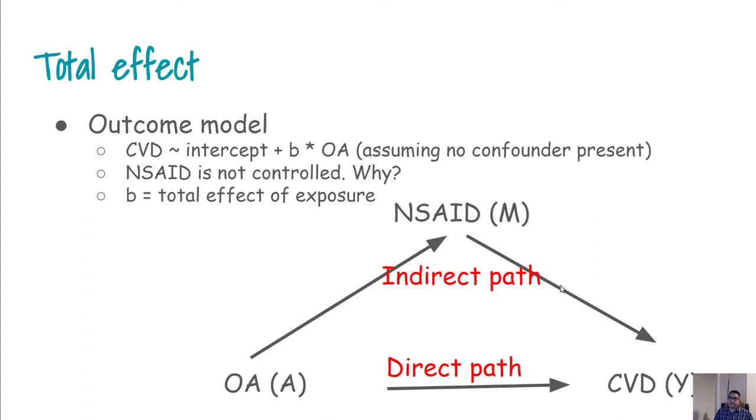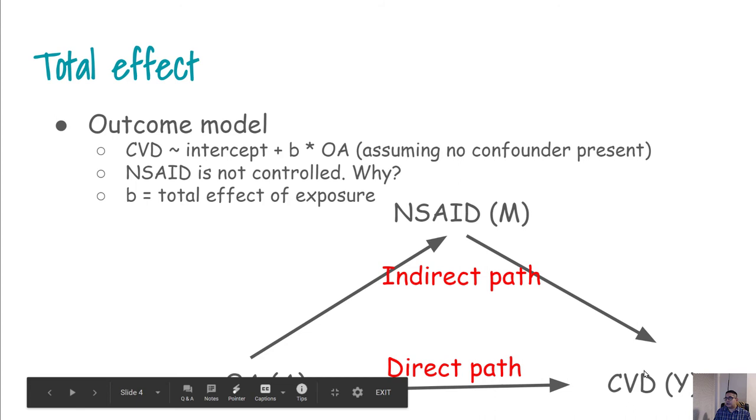We are basically interested about the relationship between osteoarthritis and cardiovascular disease. So this osteoarthritis and here is the cardiovascular disease. This path between osteoarthritis and cardiovascular disease is something we call the direct effect, and the other path that goes through the NSAIDs or the pain medication M is known as the indirect path.